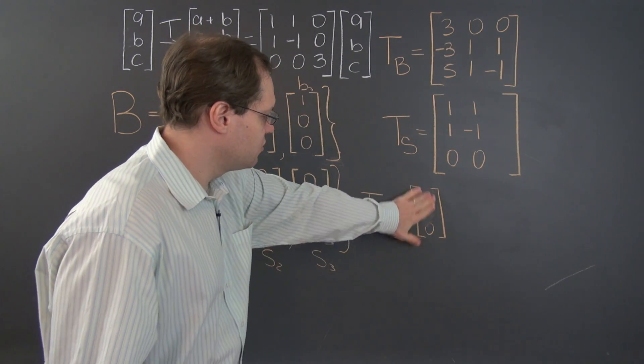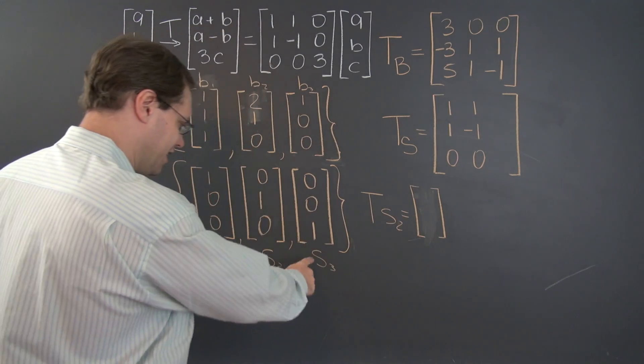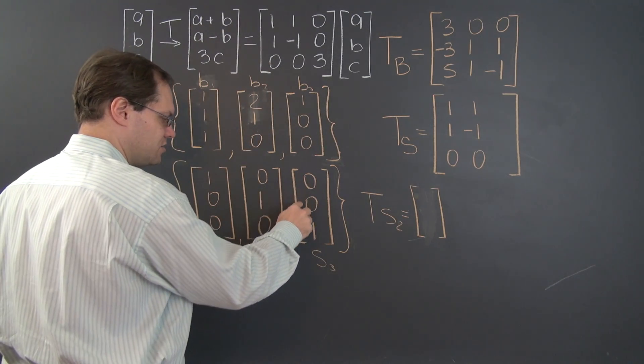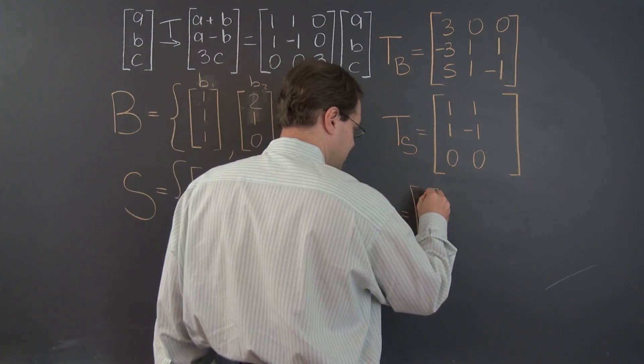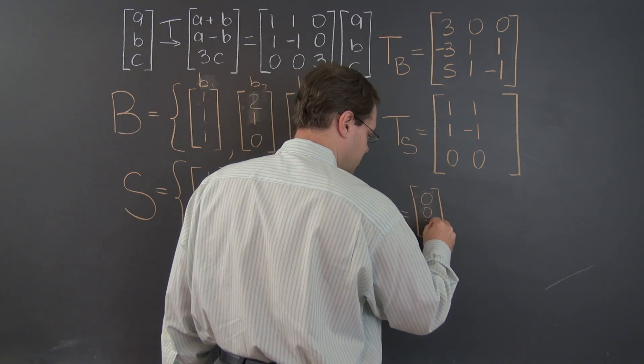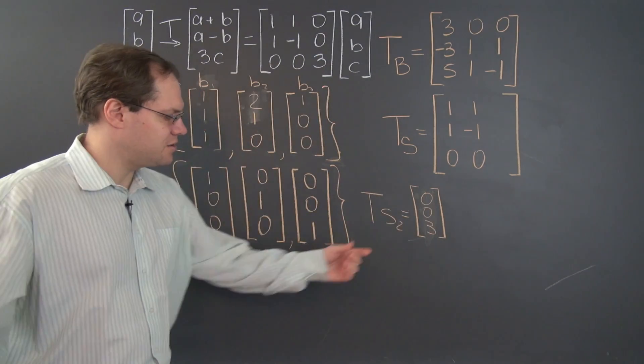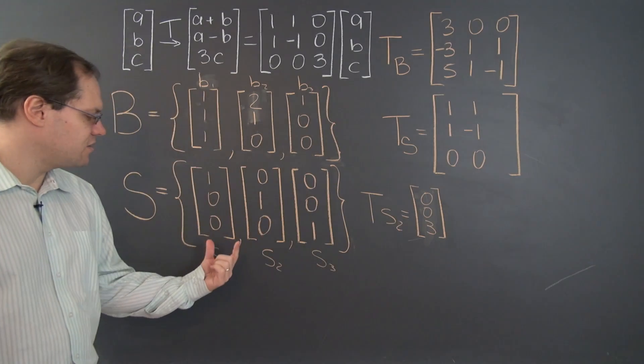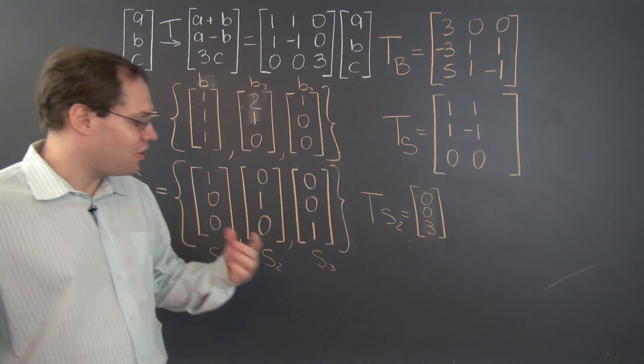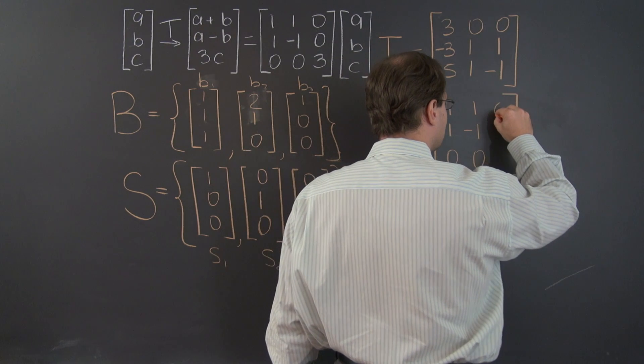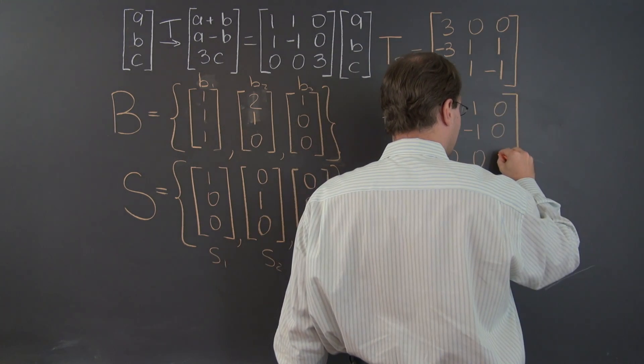All right. And finally, for R3, for S3, it's 0, 0, 3, 0, 0, 3. And once again, the components of this vector with respect to this basis are 0, 0, and 3. So that's what goes into this column.